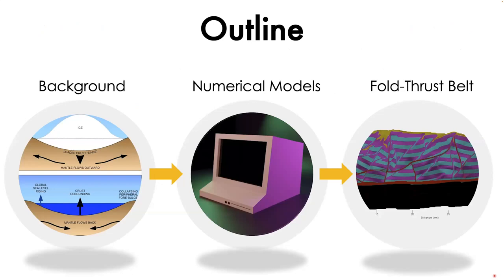My goal in this presentation is to take this generally well-understood process in geology — isostasy — and show how it could be a little more tricky than it initially seems to implement in a geodynamic model, and then show how it could be important for the structure and evolution of a fold and thrust belt. We'll start with a short background on isostasy with a little trivia and some background on fold and thrust belts, then get into the numerical modeling side of things and answer the question: how do we include isostasy in a crustal-scale model?